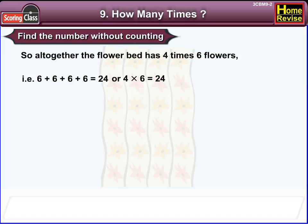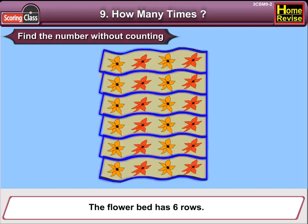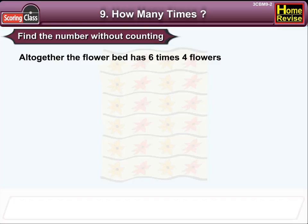Let's try it in another way. The flower bed has 6 rows. Each row has 4 flowers. Altogether, the flower bed has 6 times 4 flowers. That is 4 plus 4 plus 4 plus 4 plus 4 plus 4, which is 24. Or 6 into 4 is 24.